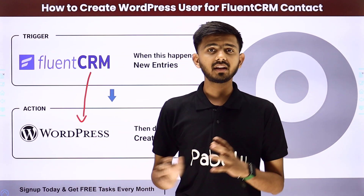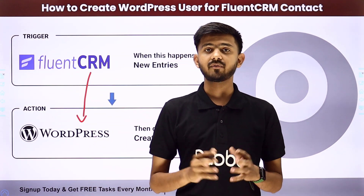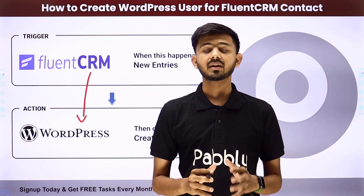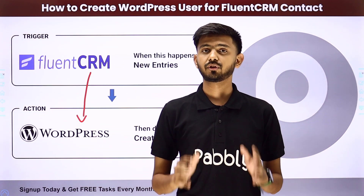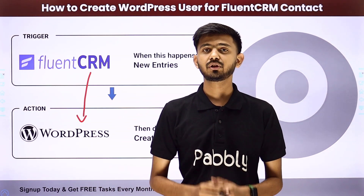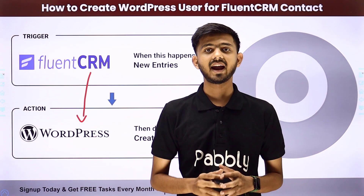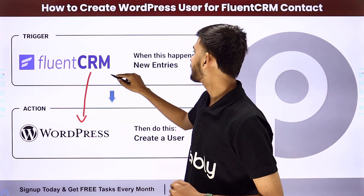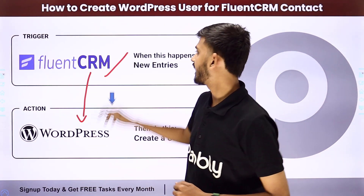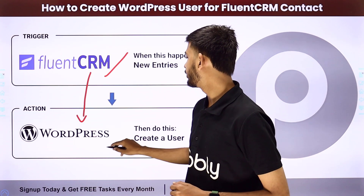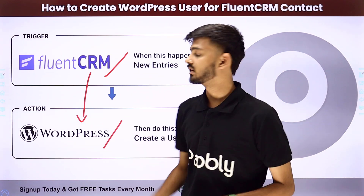For creating this integration, we are going to use Pabbly Connect, which is an amazing software for automation and integration. In Pabbly Connect, we are going to use Trigger and Action. In the Trigger application, I am going to use FluentCRM. In the Action application, I am going to use WordPress.